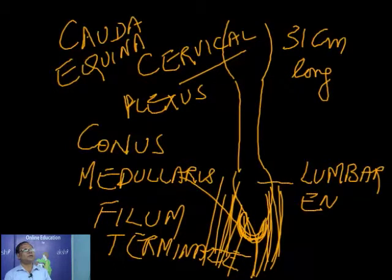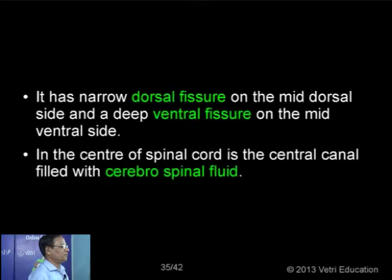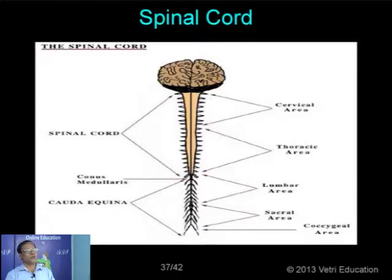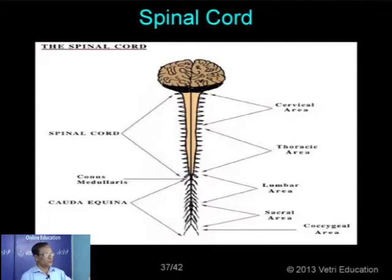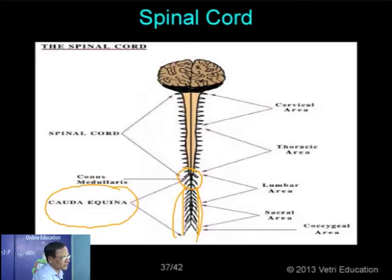This is the external morphology of the spinal cord — we have different regions corresponding to the regions of the vertebral column: cervical area, thoracic area, lumbar area, sacral area, and coccygeal area. The conus medullaris is the conical structure at the end, followed by the cauda equina — a bunch of spinal nerves arising from the spinal cord giving the appearance of a horse's tail.